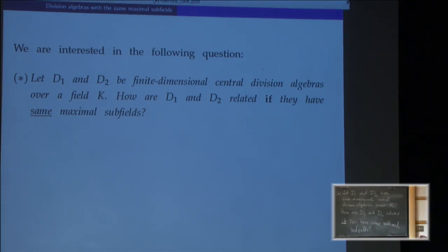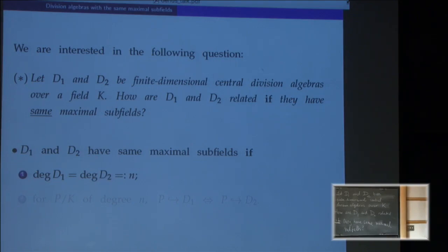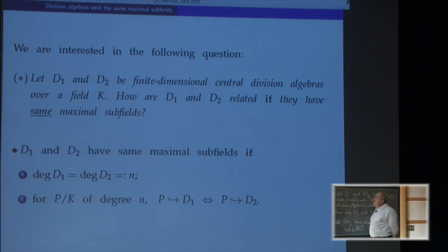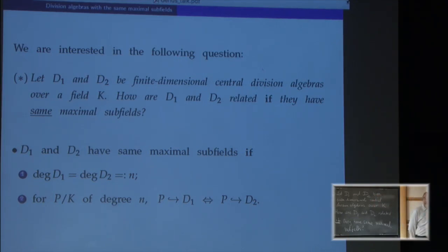To have the same maximal subfields means the following: first of all it means to have the same degree, and then satisfy the condition that a degree-n extension of the center embeds into one algebra if and only if it embeds into the other. There are several reasons that make this question worth looking at.